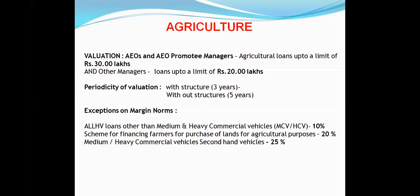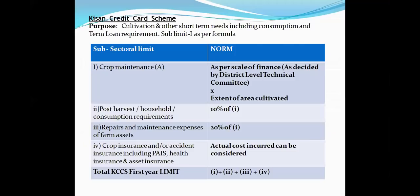Margin norms for agriculture: up to ₹1.6 lakhs we don't take any margin; above ₹1.6 lakhs we take 15–25% margin. Exceptions: for ALV/LHV (agriculture light hypothecation vehicles) and medium/heavy commercial vehicles, margin is only 10%. For financing purchase of agriculture land, the minimum margin is 20%. For second-hand medium/heavy commercial vehicles, it is 25%.